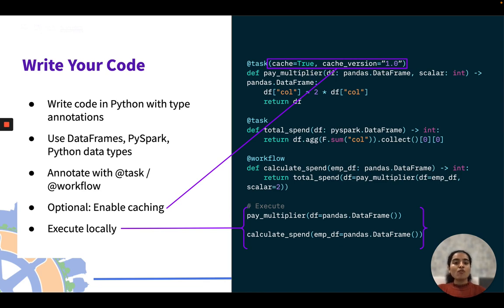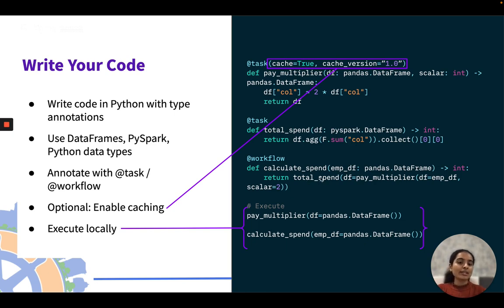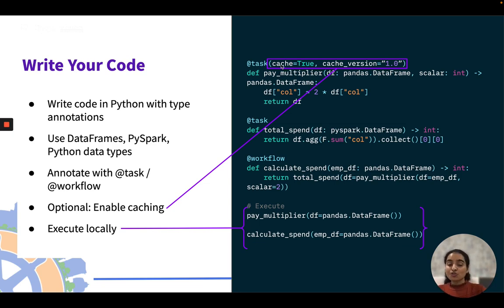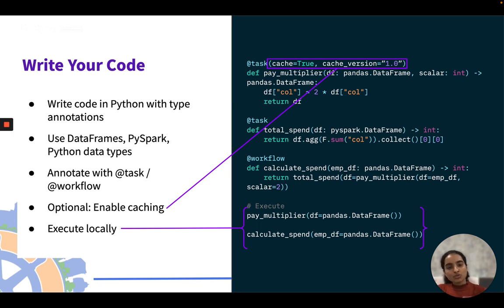Here's an example Flight code snippet in Python with two tasks and a workflow. The workflow encapsulates all tasks — total_spend depends on pay_multiplier. Cache is set to true with a cache version on the pay_multiplier task. When you modify the cache version, Flight invalidates the previous cache and re-runs the task. You can also run all this code locally, just like calling a Python function.